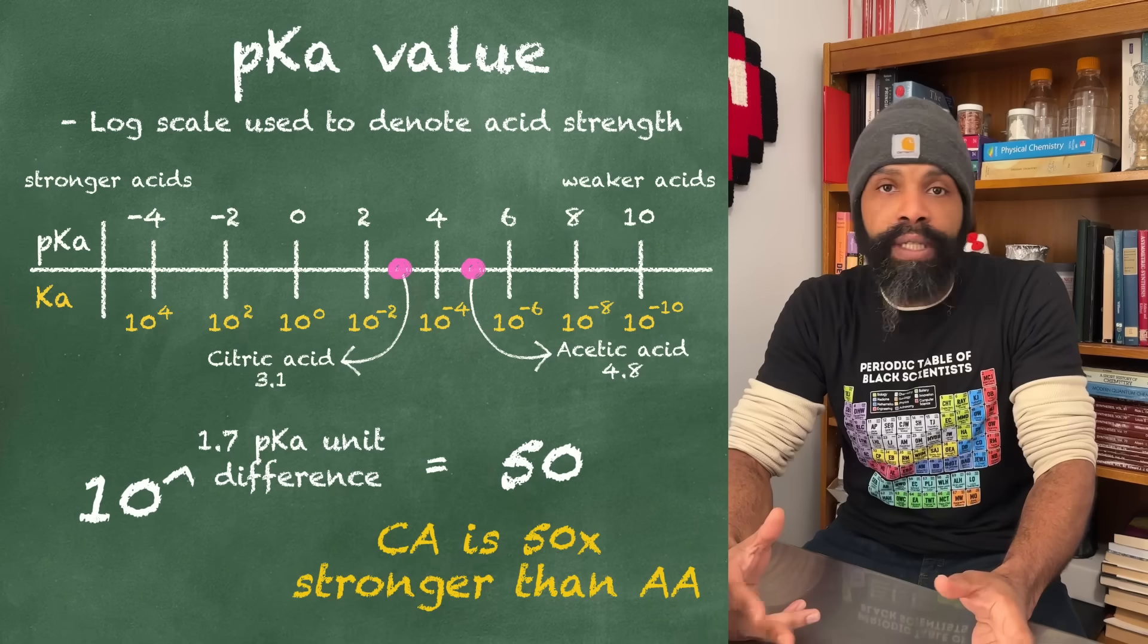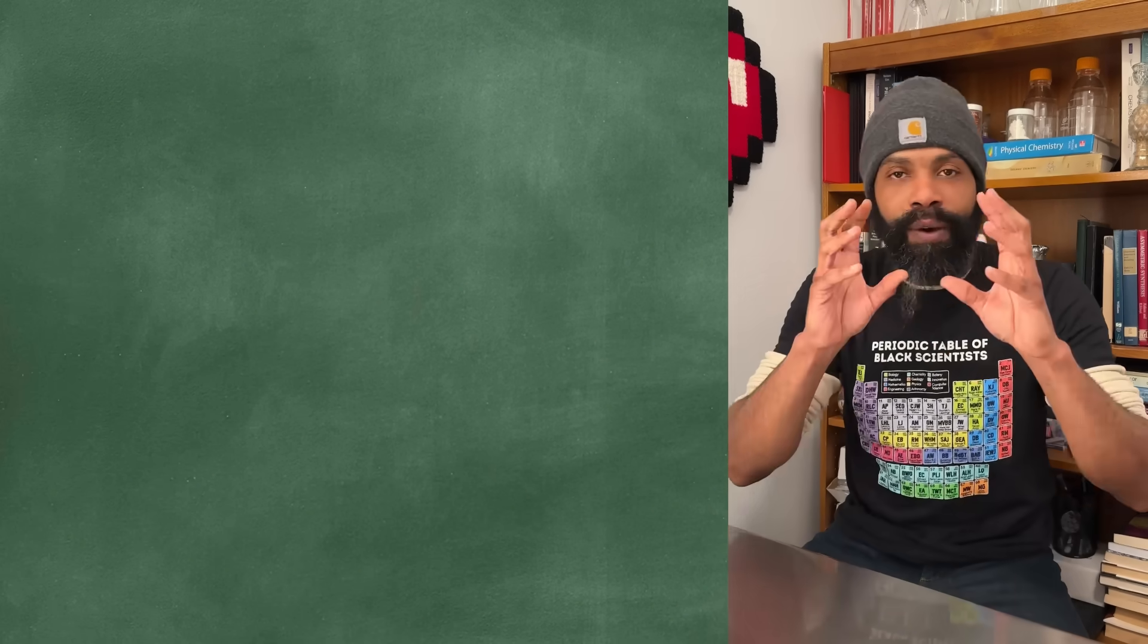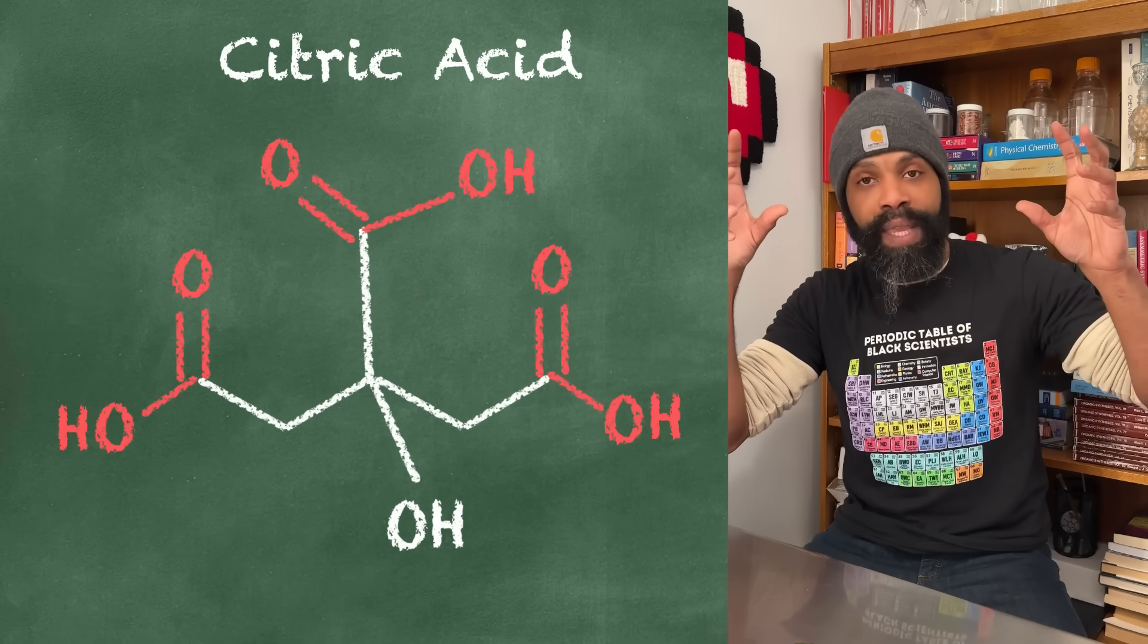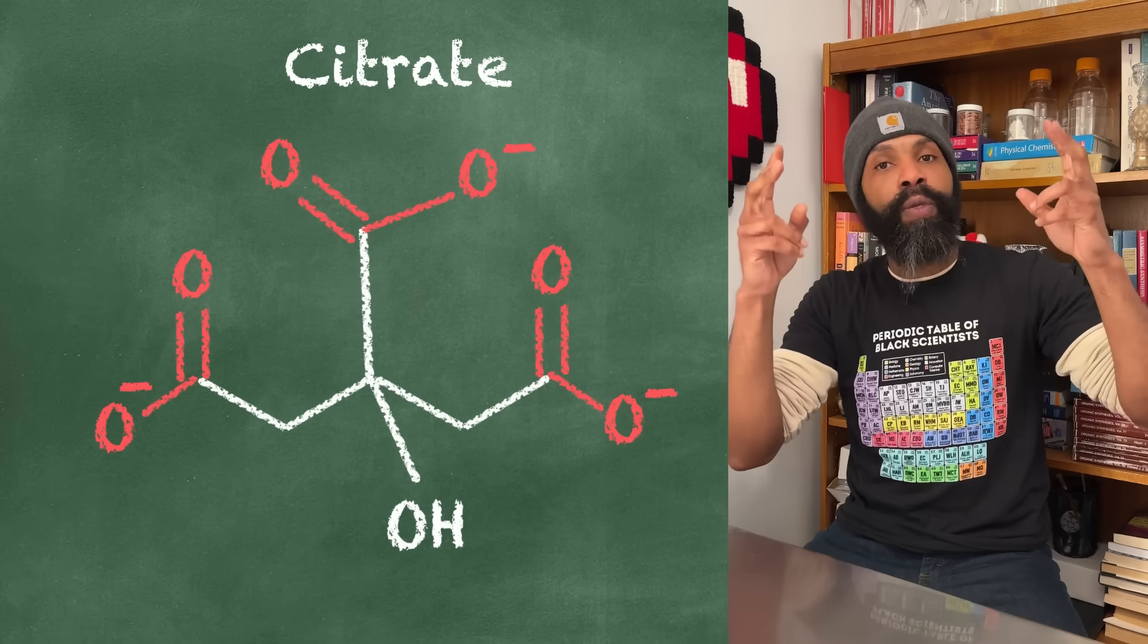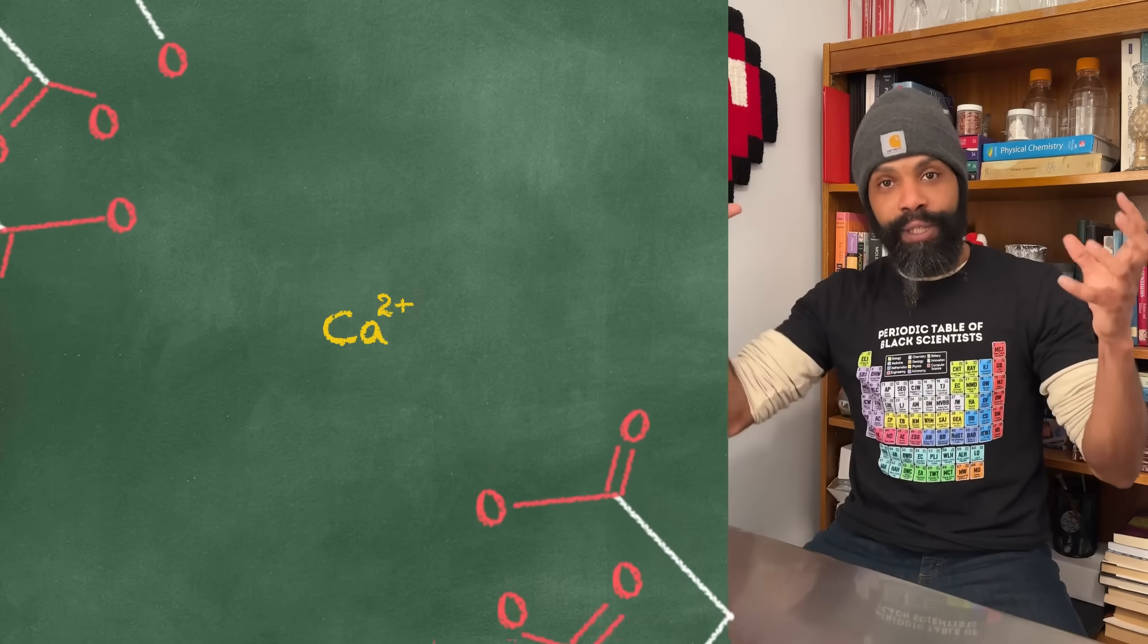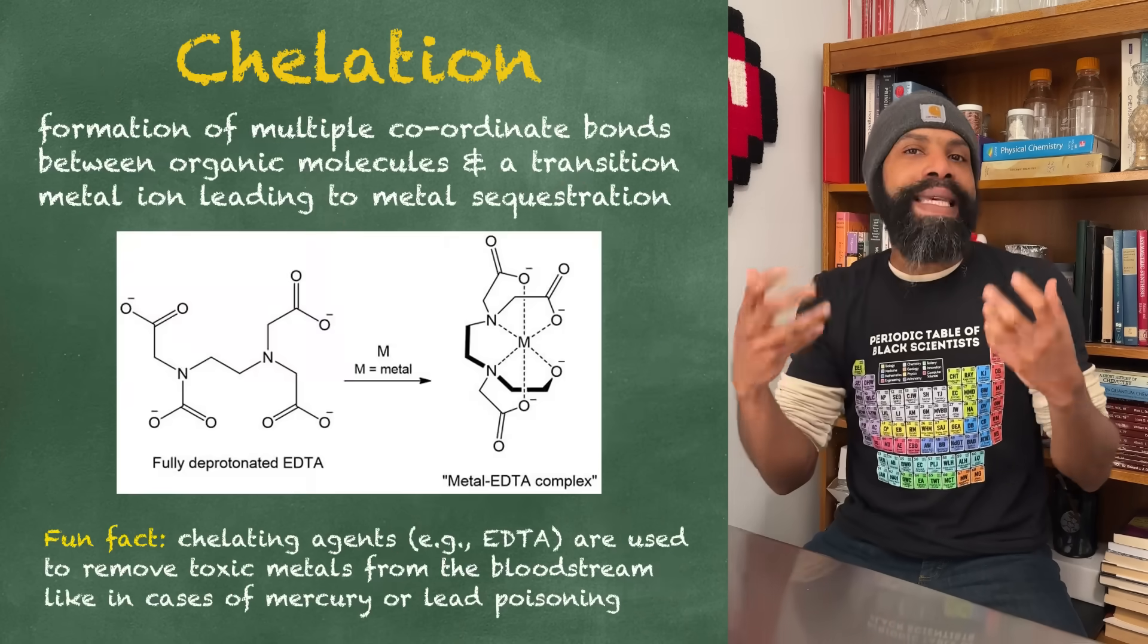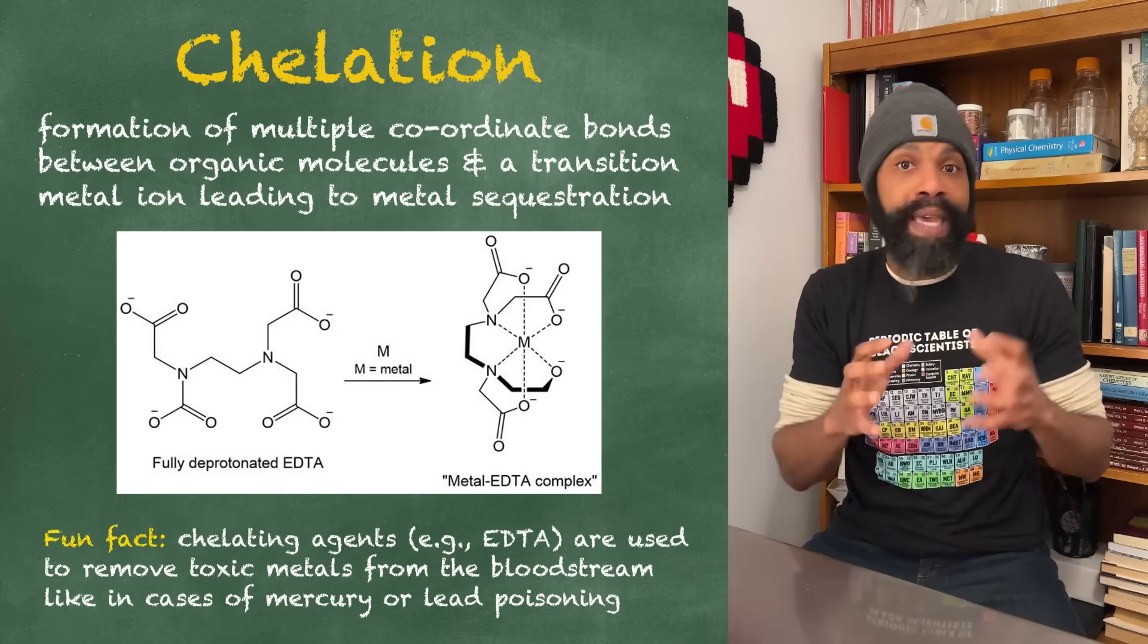One of the really special things about citric acid is the fact that it's got three of those carboxylic acids on it. Because those three groups, if they all lose their proton, all three of them can attach to metal ions. And if you get two citrate molecules, they'll both attach to a metal ion and then that metal ion can't do anything else. This is called chelation, and this chelating property - this ability to sequester metals and make them not do chemistry - is a big part of what citric acid even got used for early on.